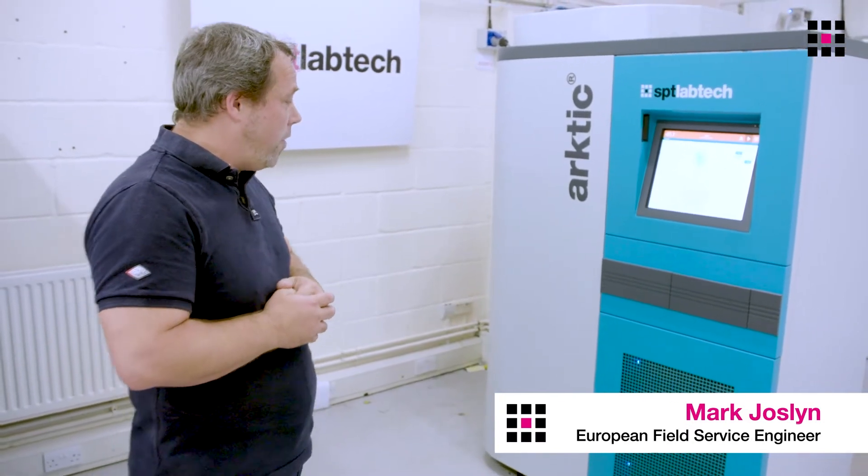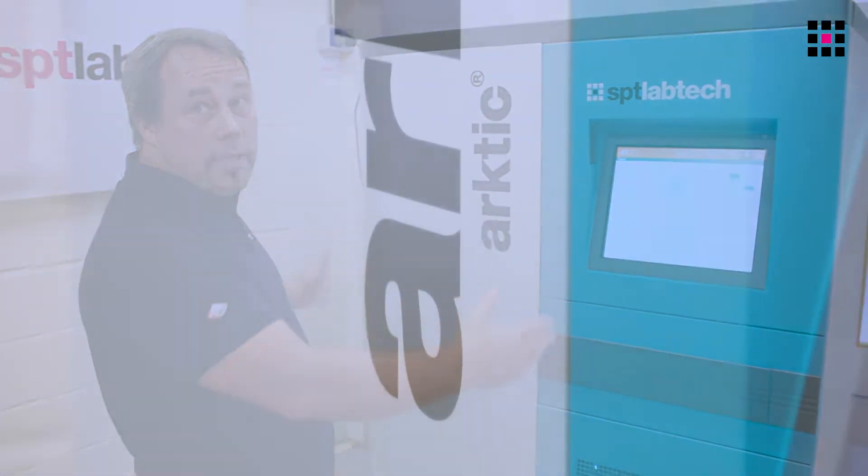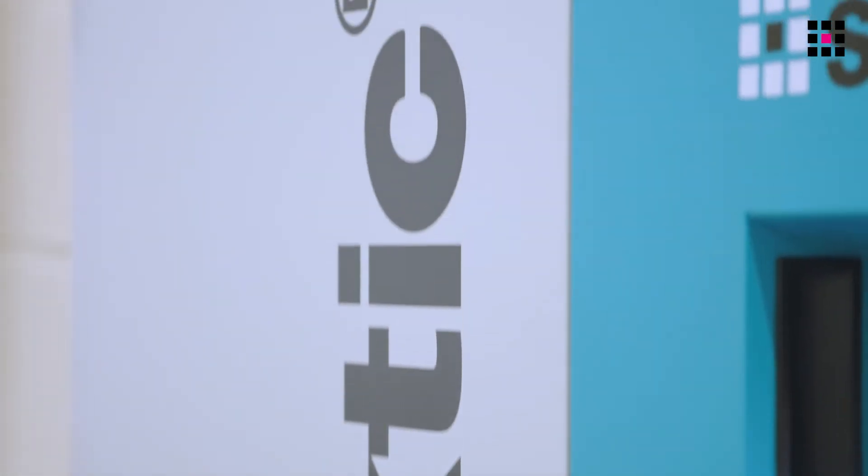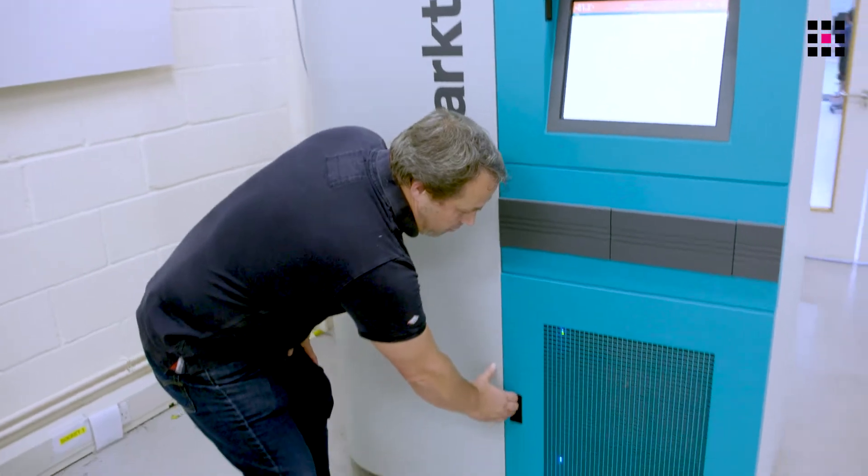If we start off from the front of the machine, you have a very compact module system. Part of the Arctic is that it's minus 80, so we have refrigeration systems on here. We have two refrigeration systems.